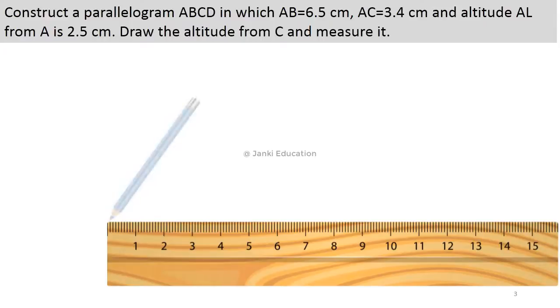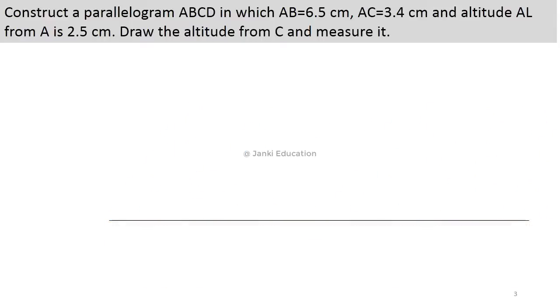So by taking this ruler and half of this pencil, you can draw a line. To read the question, we have been given the measurement of which side? AB, which we have seen in this rough sketch, that is 6.5 cm.